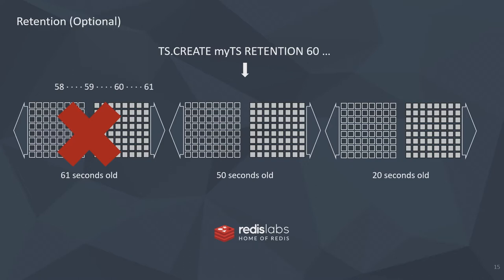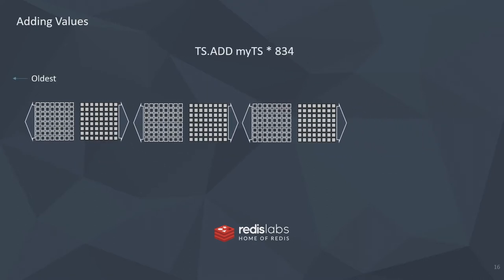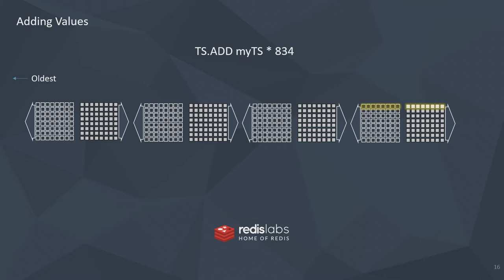Let's look at adding some values in. We use TS.ADD — my TS is my key, and I'm using that asterisk to say just give me the most recent timestamp from the server, and our value is 834. Notice we're not putting our labels in again because we've already set that up and it applies to all samples. When we add a new sample, it lights up showing what was added. If you already have an existing chunk, it'll just add into that same chunk. You can also specify a specific timestamp instead of the asterisk along with a sample value.